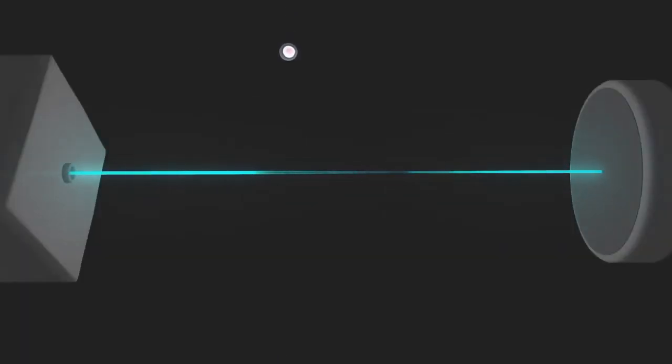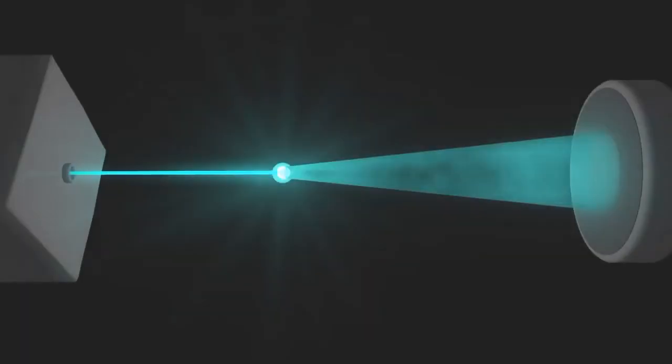As each cell passes through the laser beam, the laser beam will scatter in multiple directions. The flow cytometer detects light scattered in a forward manner called forward scatter and light scattered in a sideways manner called side scatter.